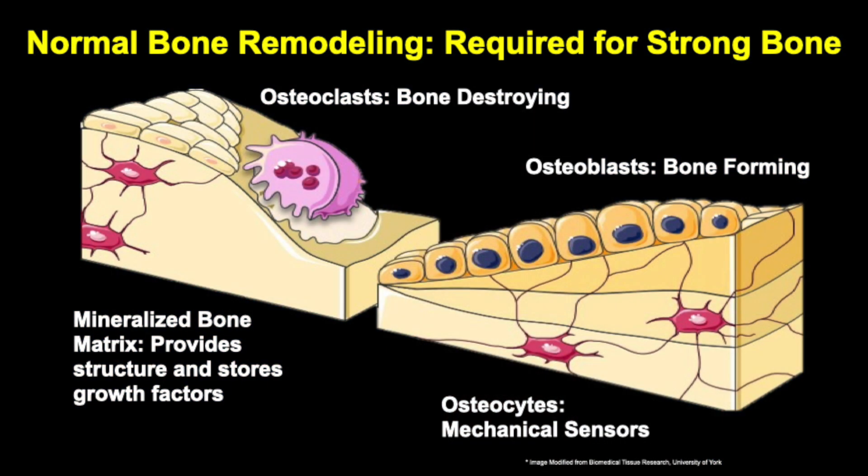That involves several important components, which are illustrated on this diagram. It simplistically shows the bone microenvironment, as we like to call it, and the important cells and components of bone that are important for bone remodeling. There are three different cell types.